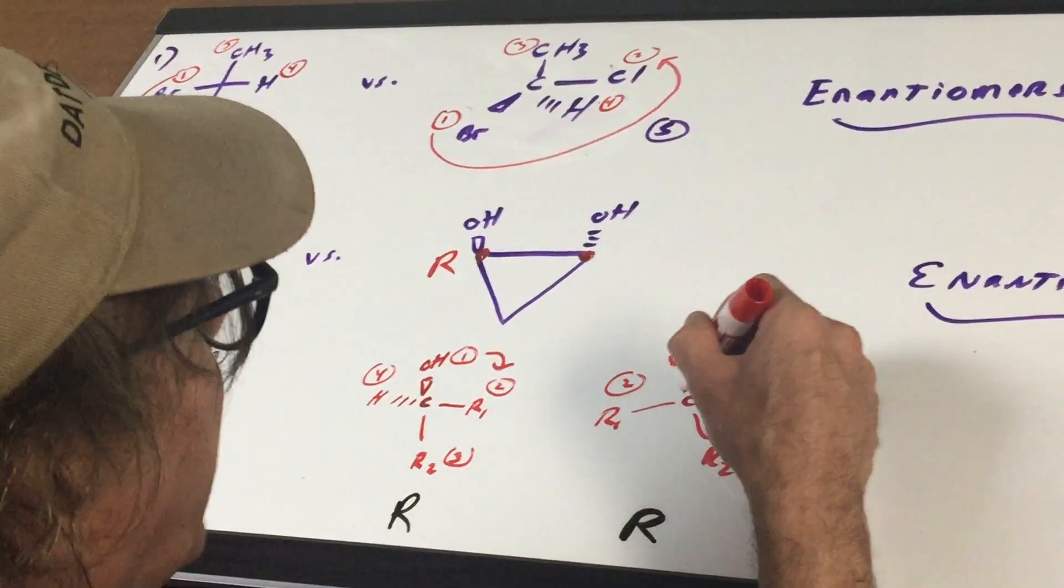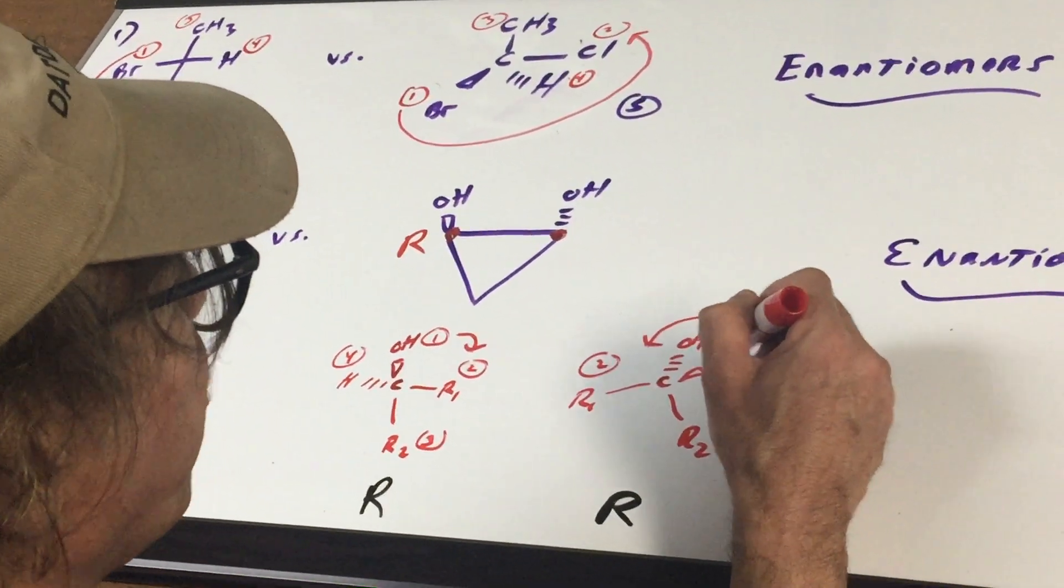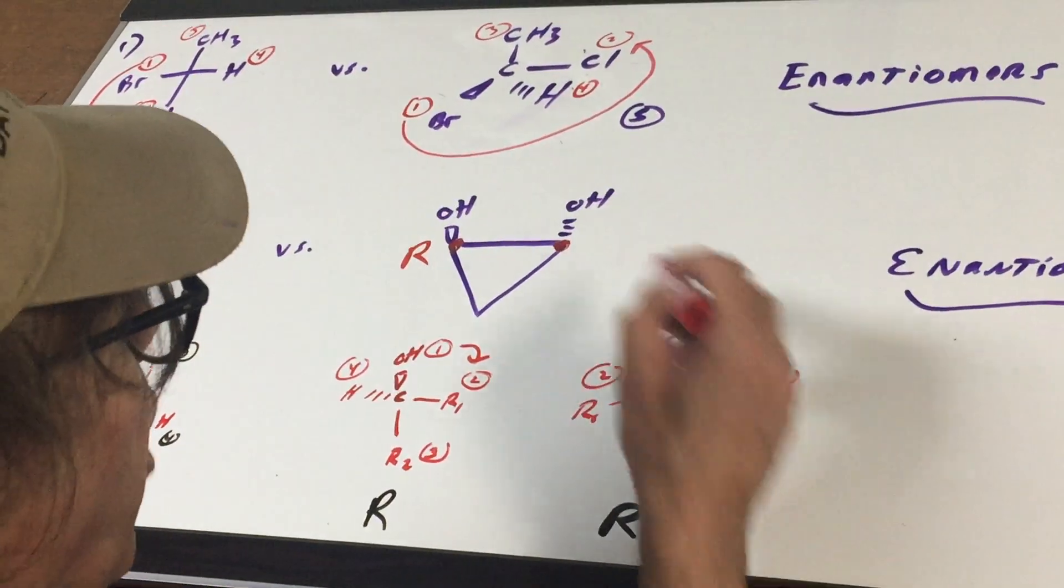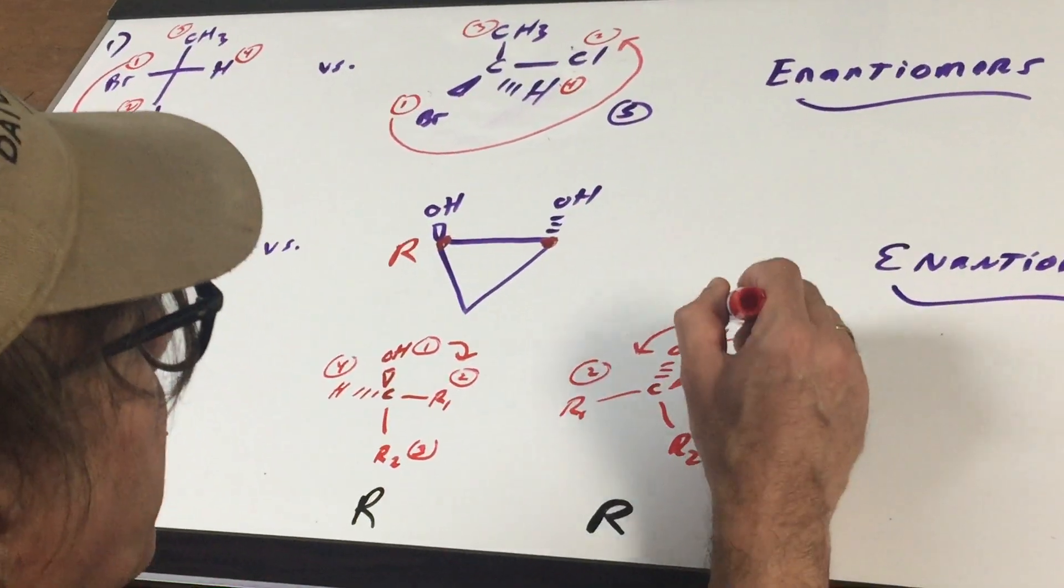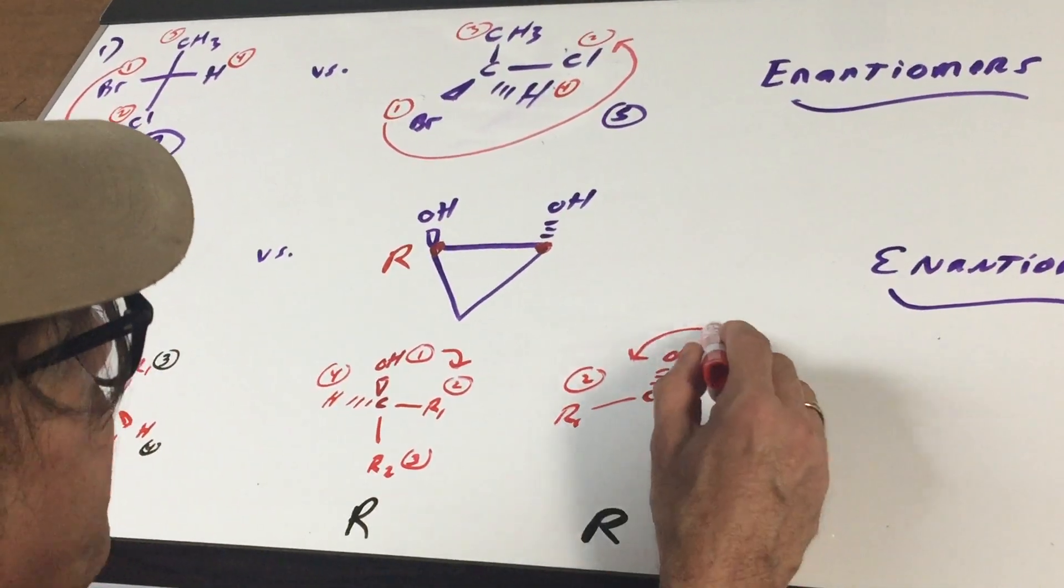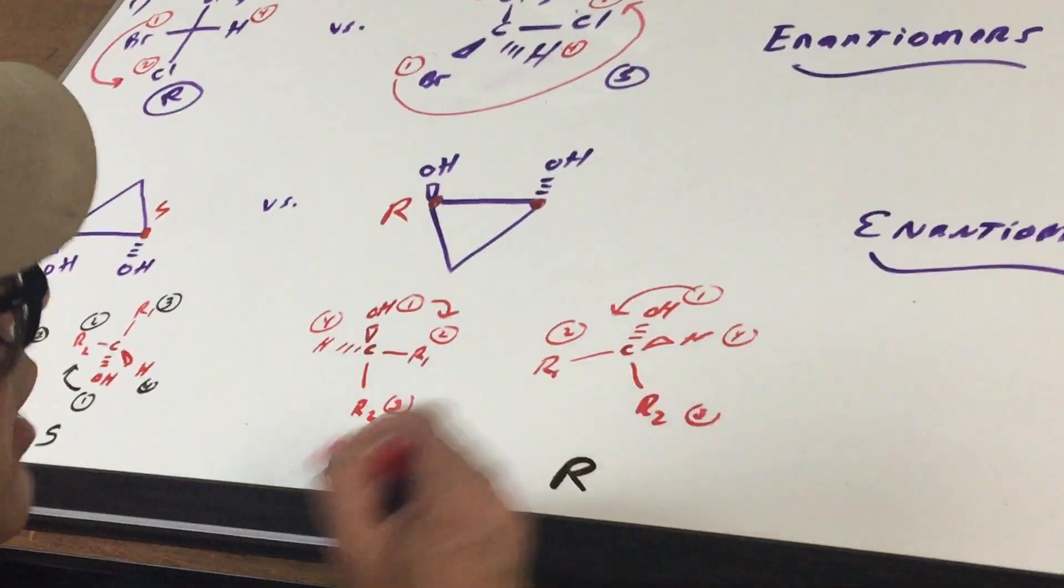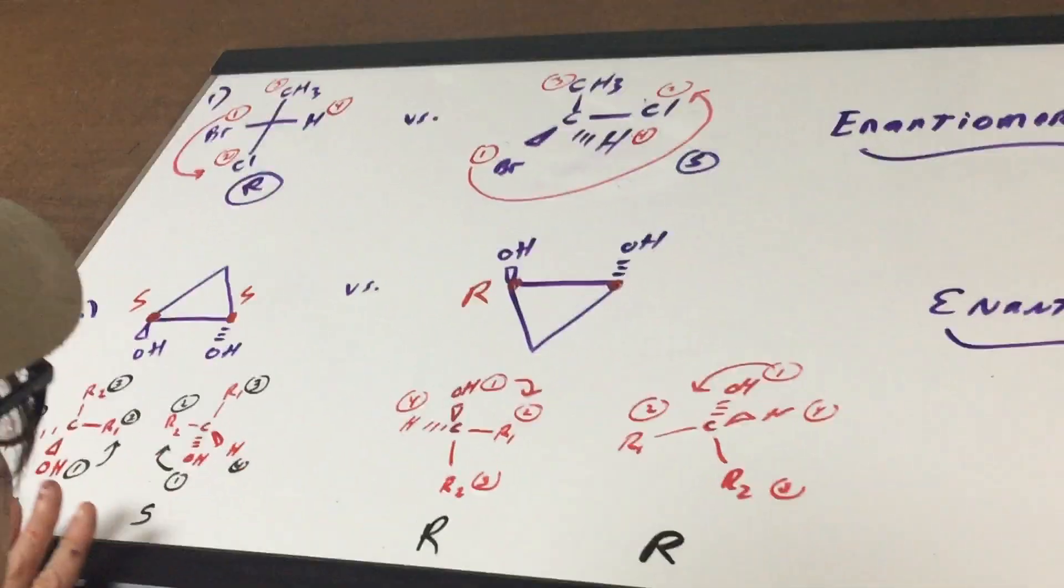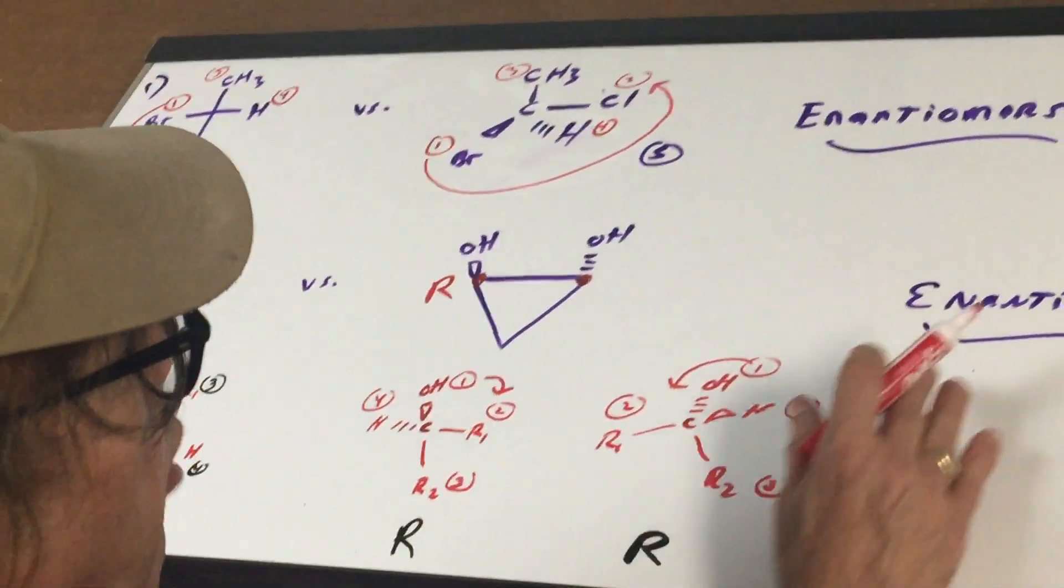And then finally, you got a carbon with the OH. There's the invisible H. To the left of me, I'll call it R1. Underneath R2. This is one. This will be two. Three, four, as we did before. It looks like an S. Because four is a wedge, it's an R. So we have an SS and an RR.